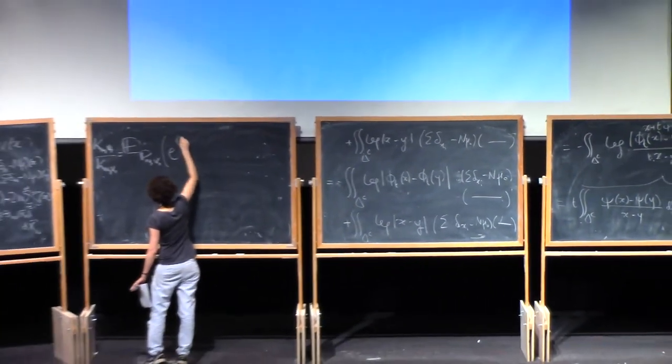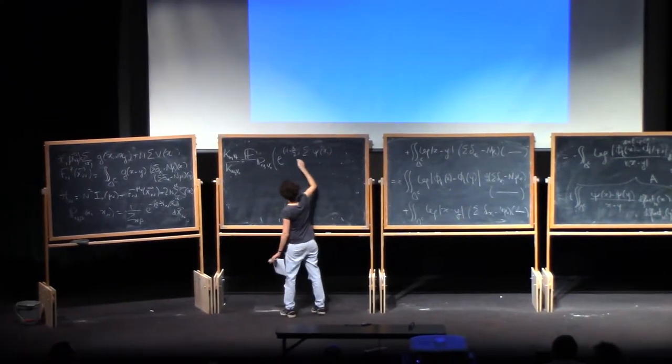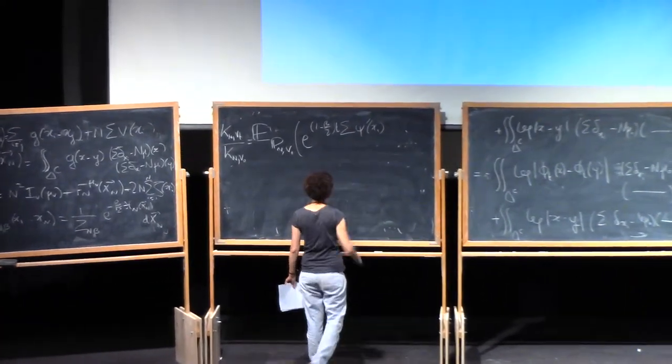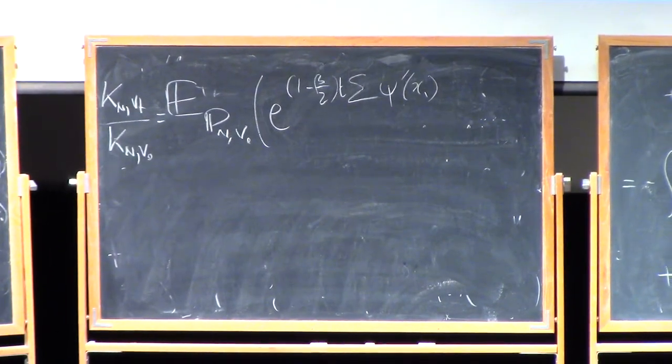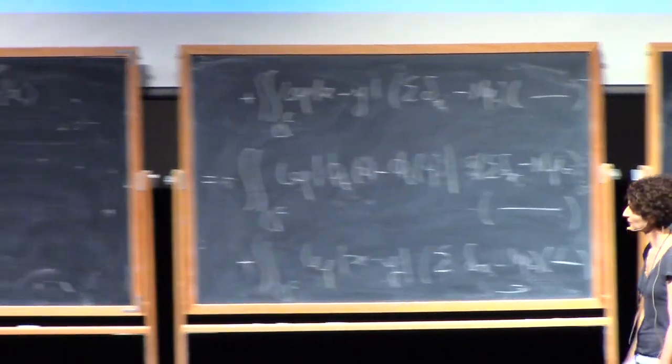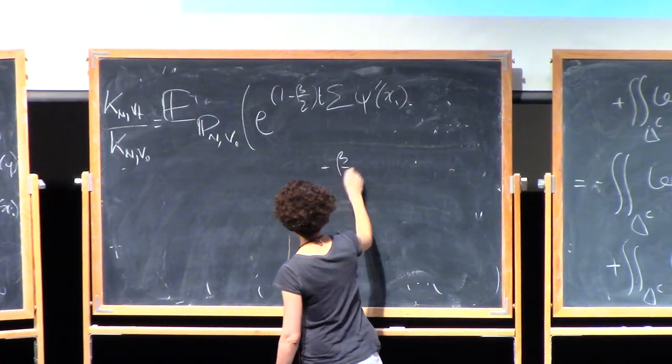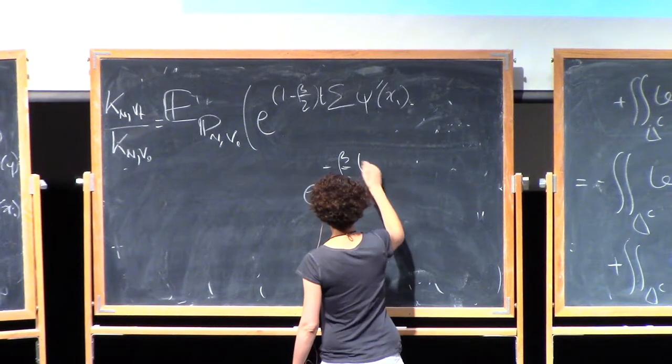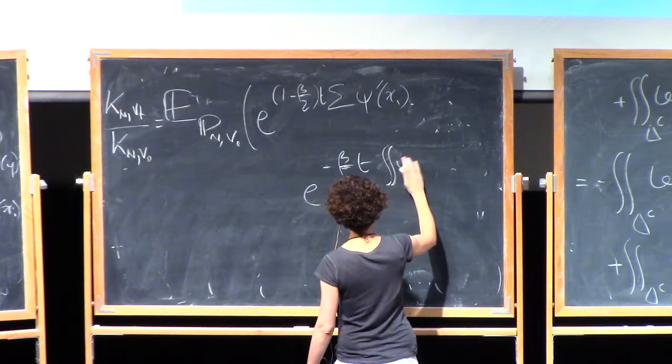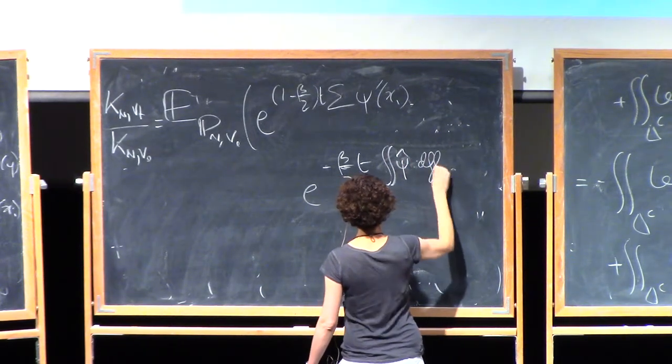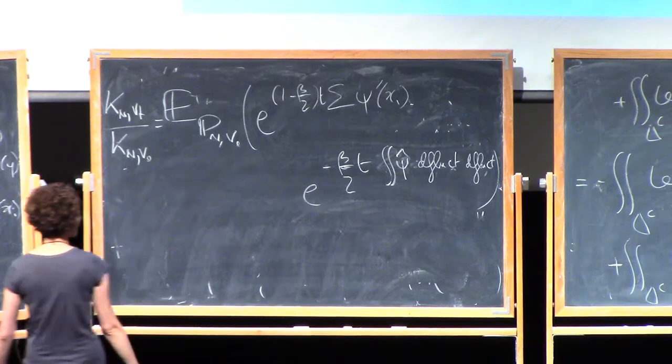So this can again be rewritten as the expectation of something where I'm going to get 1 minus beta over 2. The sum of the Psi prime i with a t. So this is what the term should give, if I'm not mistaken with the signs. And then I get this guy. Plus t. So it comes with a minus beta over 2. So still in the exponent. Times t. Times this term, let me call it b. Or double integral of Psi hat. Deflect, deflect.